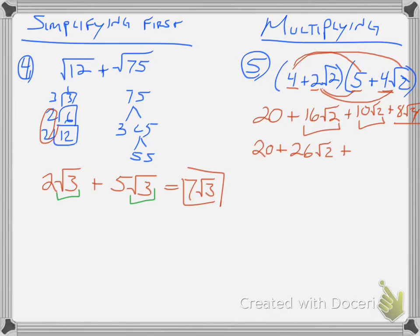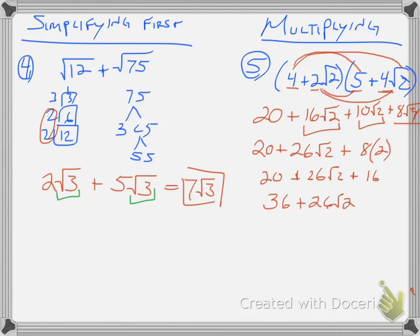This last term also simplifies: the square root of 4 becomes 2, so it's 8 times 2 which is 16. Now I have 20 plus 26 square root of 2 plus 16. The 20 and 16 combine to give 36 plus 26 square root of 2. I cannot combine the 36 with the 26 because the 26 has that square root of 2. So that's the simplified answer.